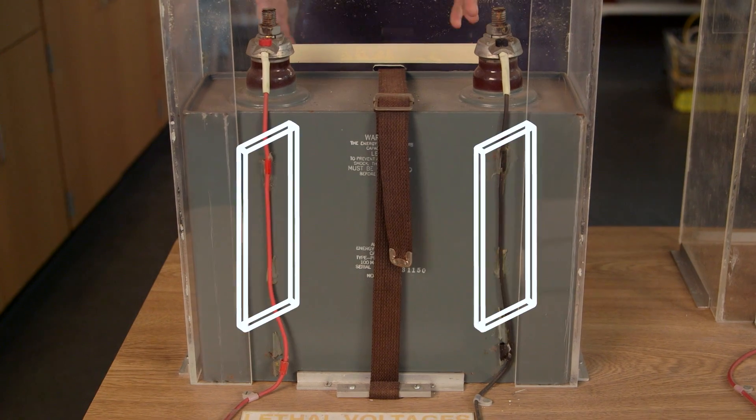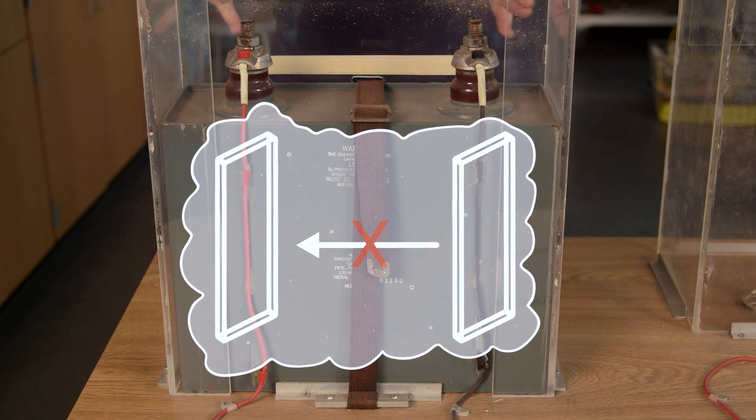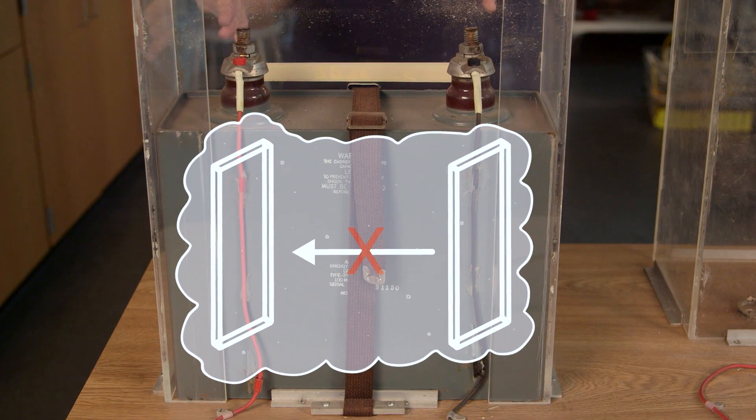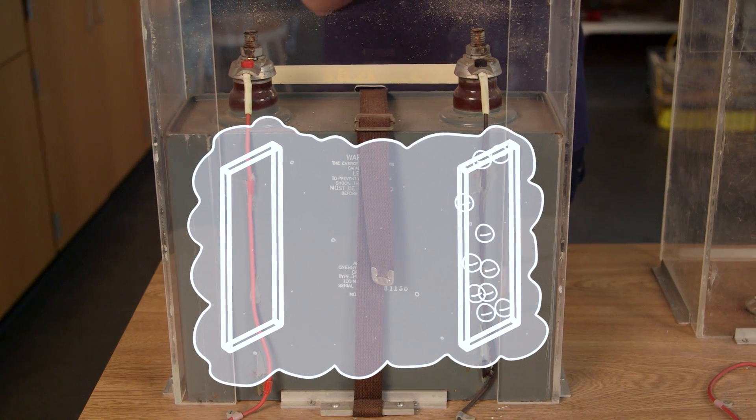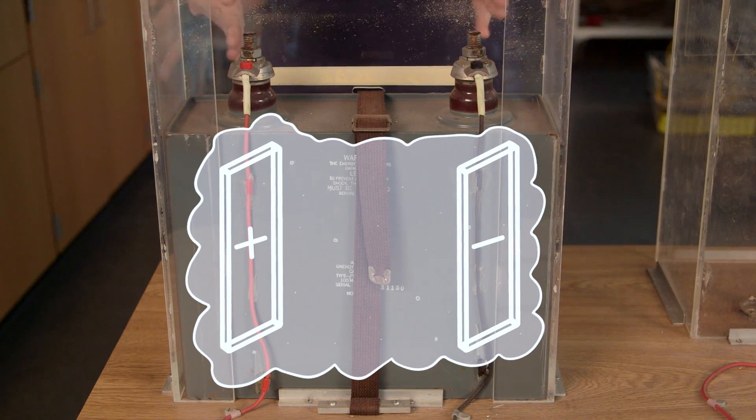Now a capacitor is two metal plates in an insulating oil. Charge can't flow through the oil from one plate to another, so it builds up on one of the plates, charging it negatively. The other plate is left with a positive charge.